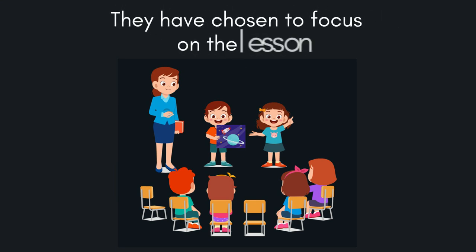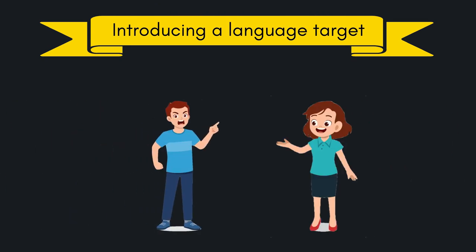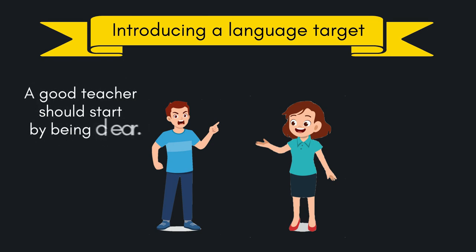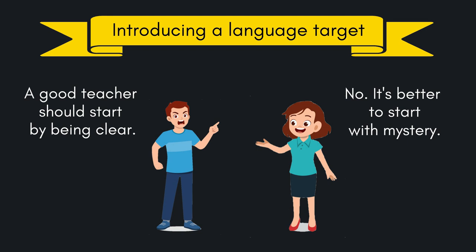If we start from this idea, what is the first thing we need to do in a lesson? I think it means we need to start with an attractive or intriguing activity that draws the children into the lesson, so that they choose to stop focusing on whatever they were focused on and choose to focus on our lesson. And what is the first thing we need to do when introducing a new language target? Many common ways of introducing new language targets start with the teacher imposing their realities on the children. If we start with the idea that each child is living in their own unique reality, it makes much more sense to start with an activity that draws the children in and enables them to discover the new language target for themselves.